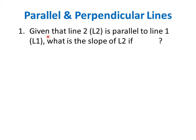Let's consider some examples. Given that line 2 (L2) is parallel to line 1 (L1), what is the slope of L2 if the slope of line 1 is equal to 3? We know that parallel lines have equal slopes. Therefore, the slope of line 2, M2, is equal to M1, which is equal to 3.